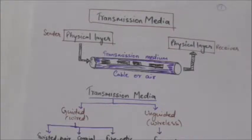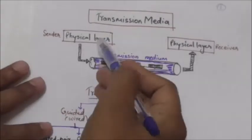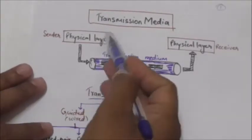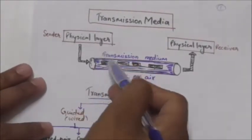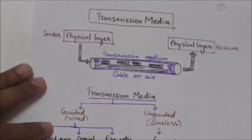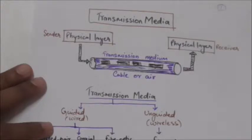Hello friends, welcome back. In this tutorial we are going to study about transmission media. The transmission media are located below the physical layer and are directly controlled by the physical layer. Transmission media can be broadly defined as anything that can carry information from source to destination. In data communications, the transmission medium is usually free space, metallic cable, or fiber optic cable, and the information is usually a signal that is the result of conversion of data.